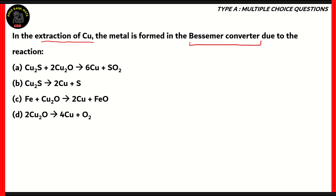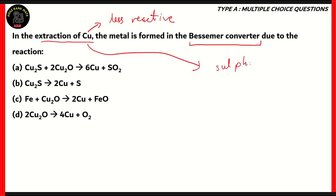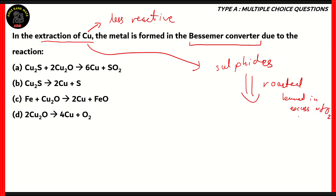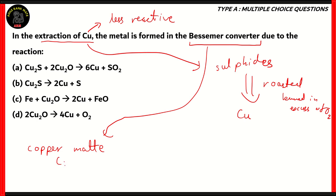When we come across the extraction of copper, you notice that copper is an element that does not react very well — it's a metal that's less reactive. For metals that are less reactive, we usually form sulfides. We form sulfides of those metals once we extract them from the ores. And then these sulfides are roasted, which means burned in excess of oxygen. In the Bessemer converter, what we get is copper mat, which is basically Cu2S.